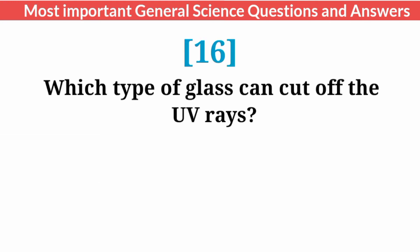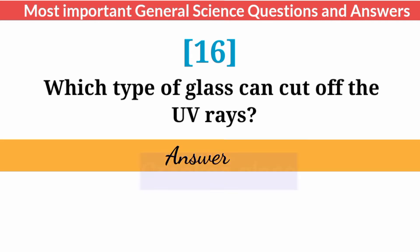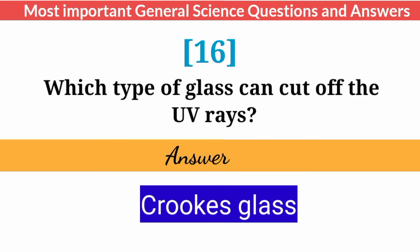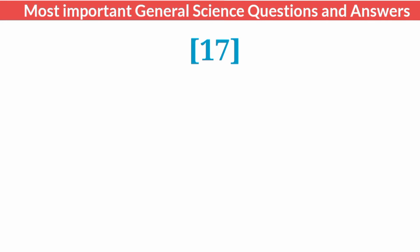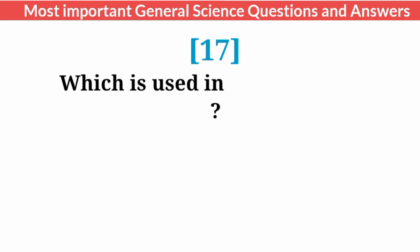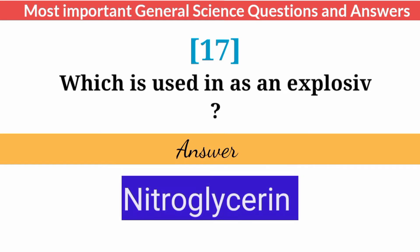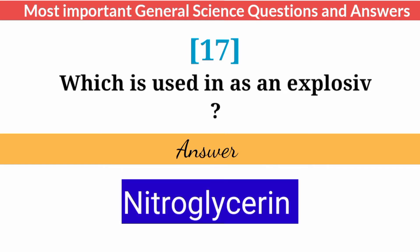Which type of glass can cut off UV rays? Answer: Crookes glass. Which substance is used as an explosive? Answer: Nitroglycerin.